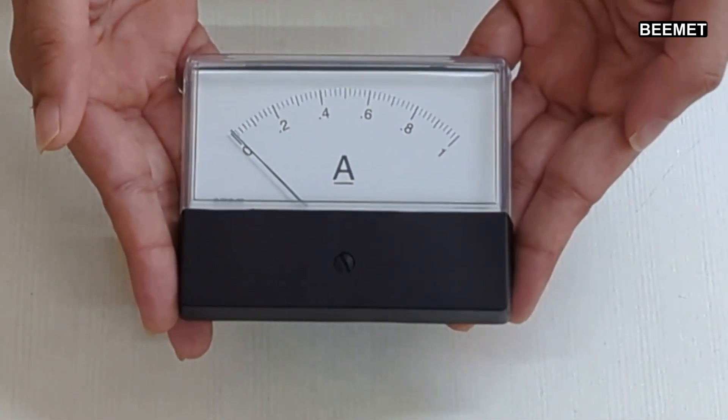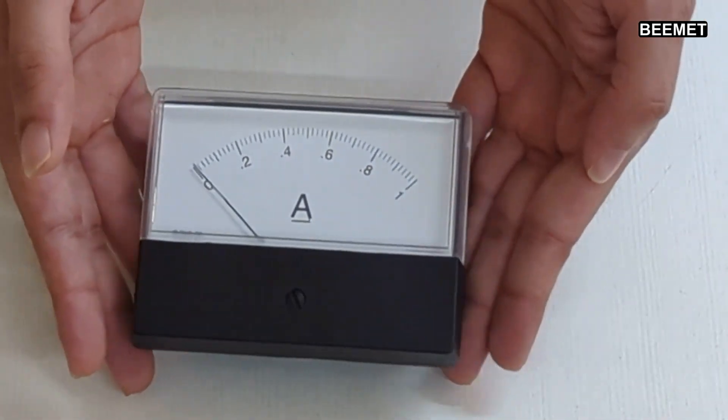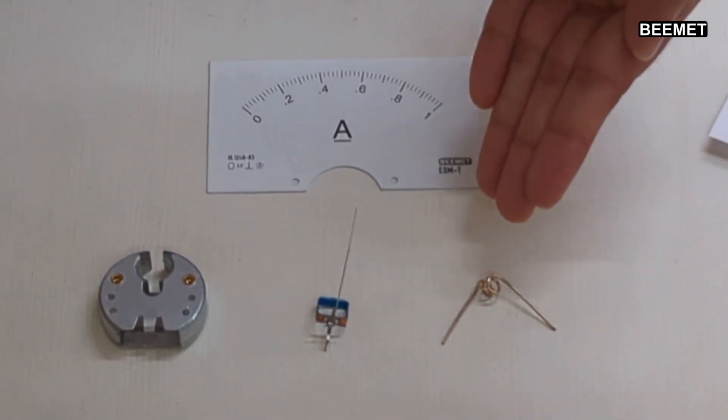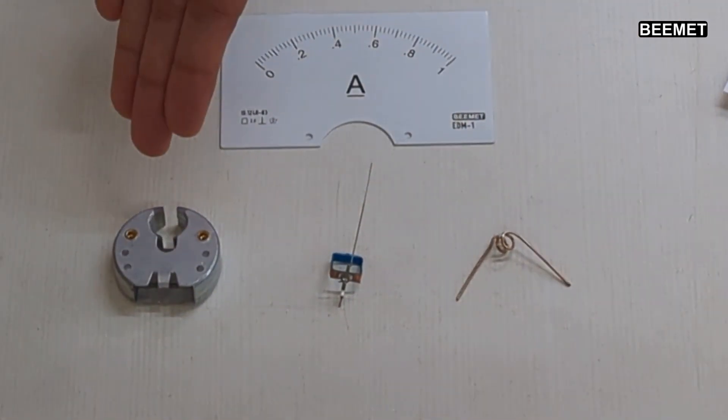An analog ammeter is a device used to measure electric current. It consists of a coil of resistance wire, a pointer, a magnet, and a scale.